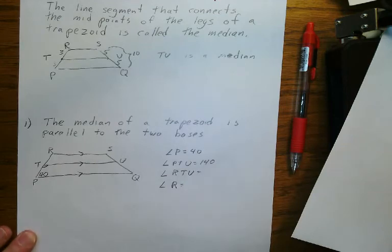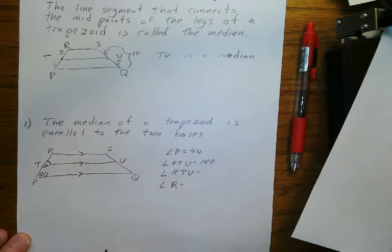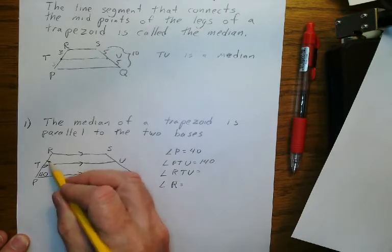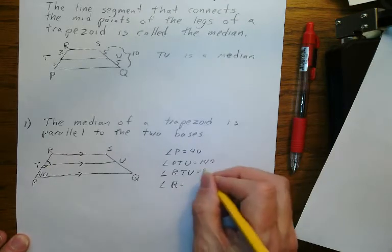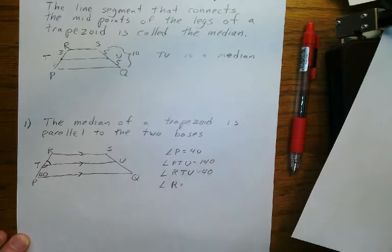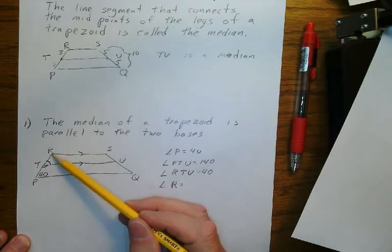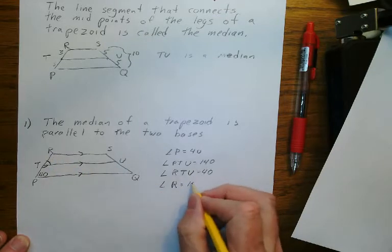What about RTU? RTU is right there. Again, with properties of parallel lines, if this is a transversal, 40 and that angle are called corresponding angles, and they're congruent. So this angle is 40. And lastly, we're trying to find angle R. These are interior angles on the same side of the transversal, so that's also going to be 140.